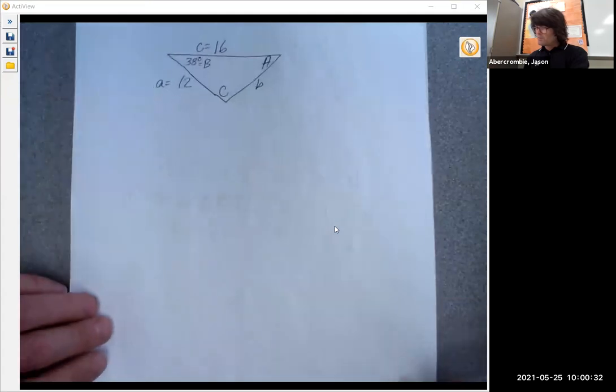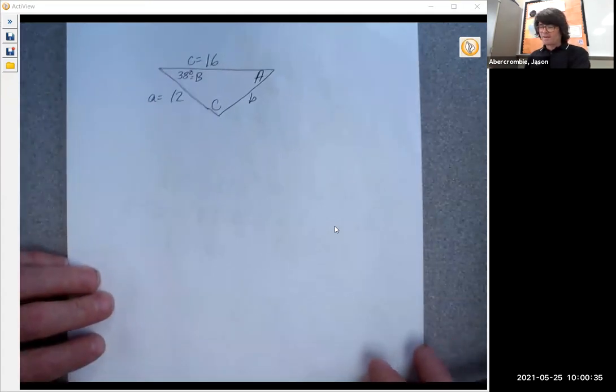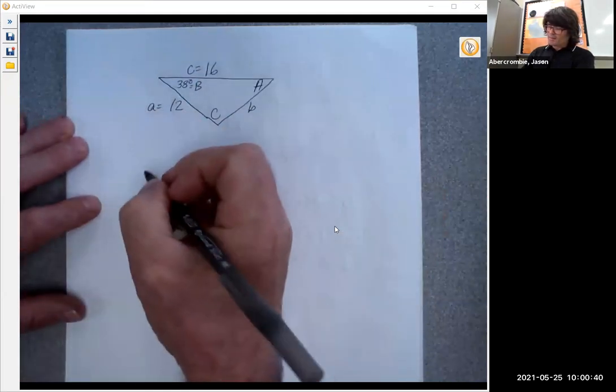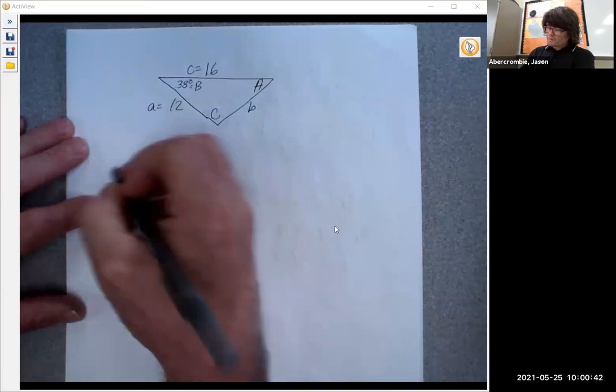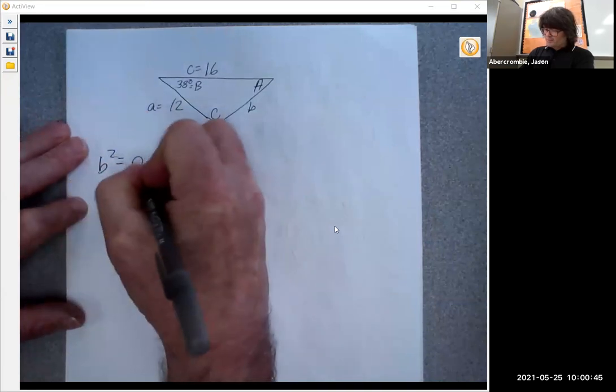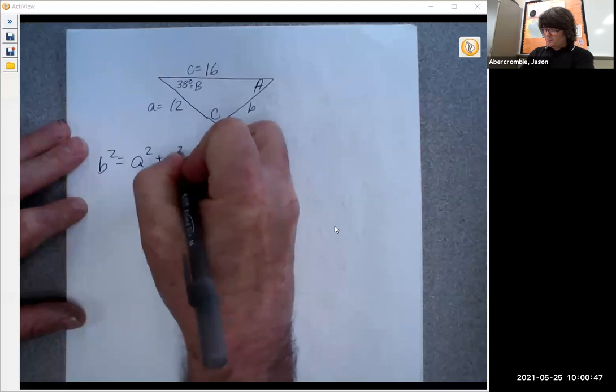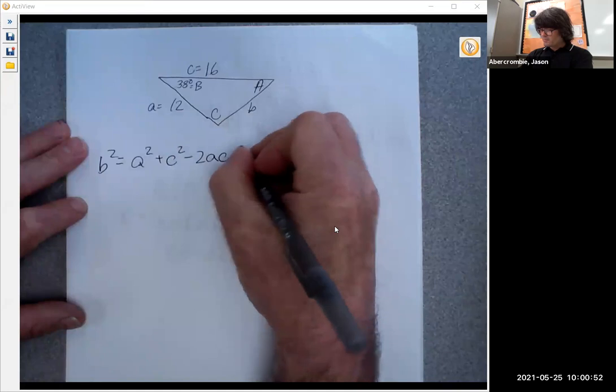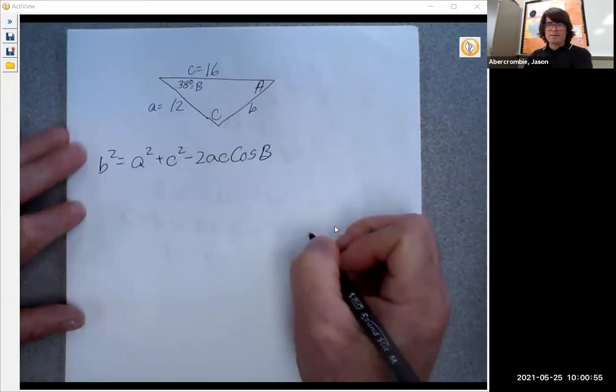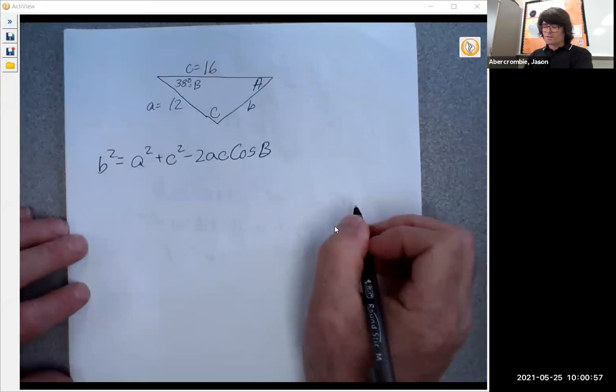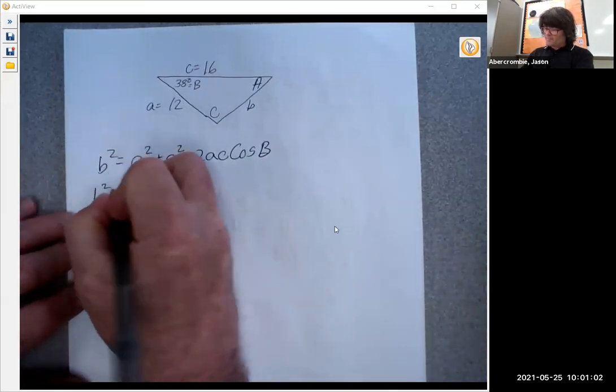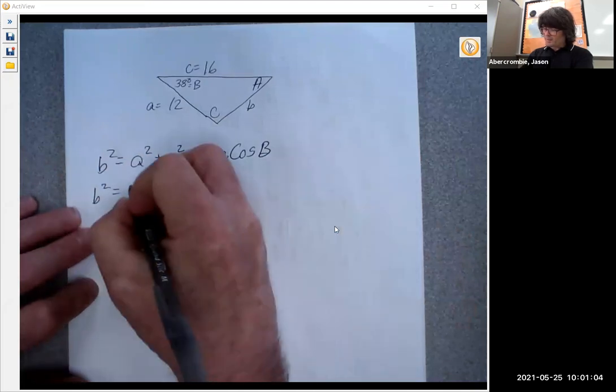To start with, we're going to do this example. I have angle B. I have two sides. So I'm going to start out by using this formula. B squared equals A squared plus C squared minus 2AC cosine B. And so we're going to put in A, put in C, put in angle B, and we'll spit out B squared.